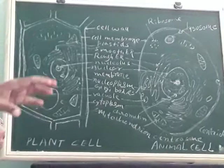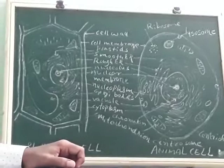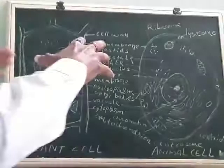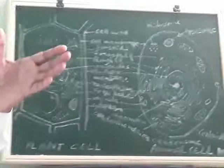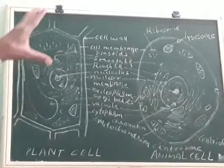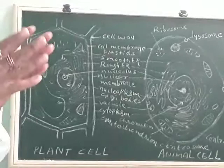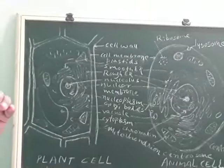Cells also vary in shape. Some nerve cells in our body are nearly one meter long. Some cells have a fixed shape, while others like WBC continuously change their shape. Most cells are of different shapes — round, spherical, or elongated spindle shape. RBCs are biconvex, looking like a lens.